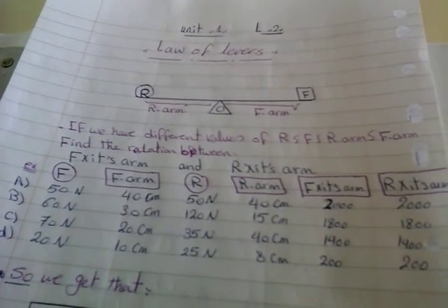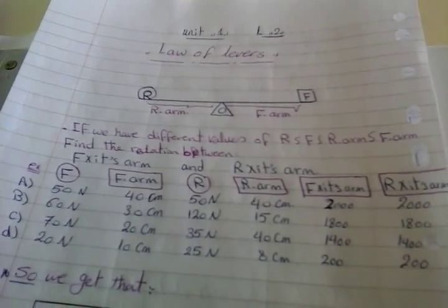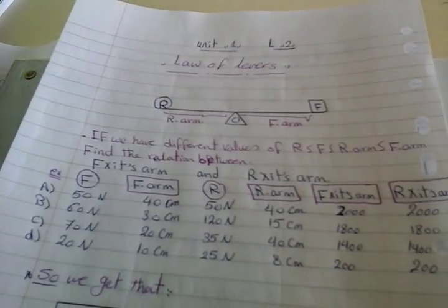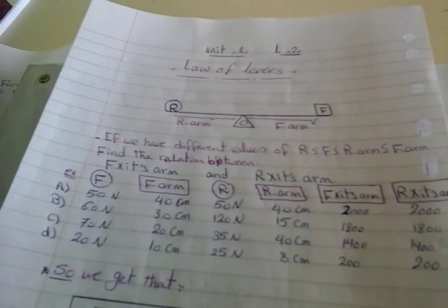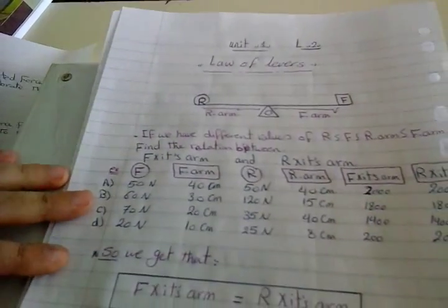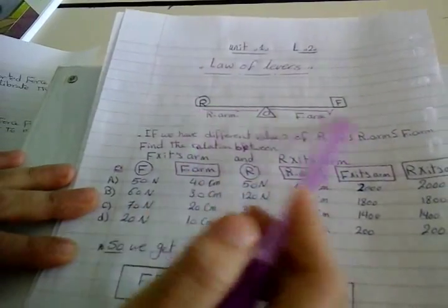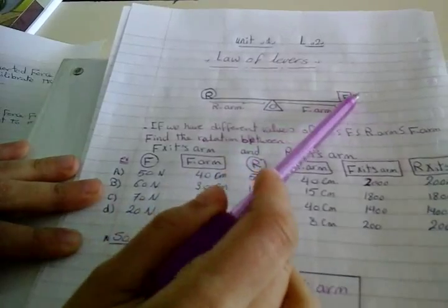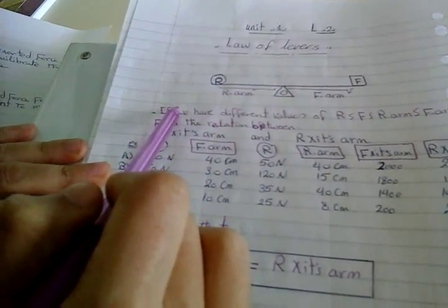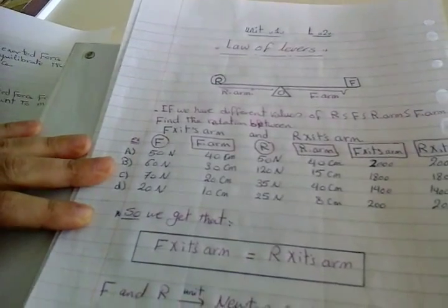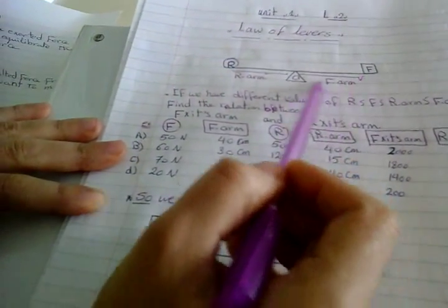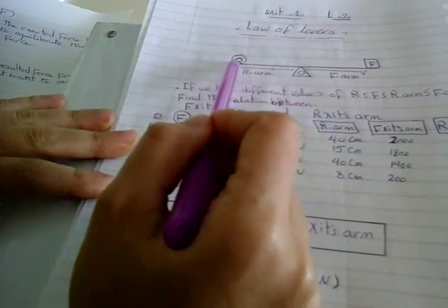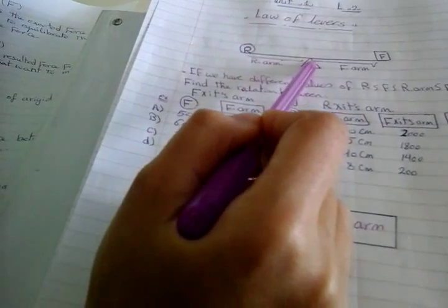Today we will start lesson number two in unit one, which is talking about levers. But first we need to make a revision for the previous part. Let's remember what is made by levers. The lever is a rigid bar, rotated around the fulcrum, and affected by two forces: effort force and resistance force. Now we need to know the distance between effort force and fulcrum, and the distance between resistance and fulcrum.